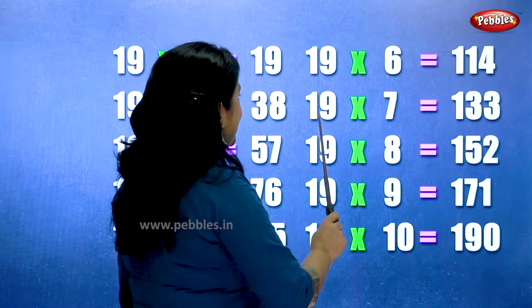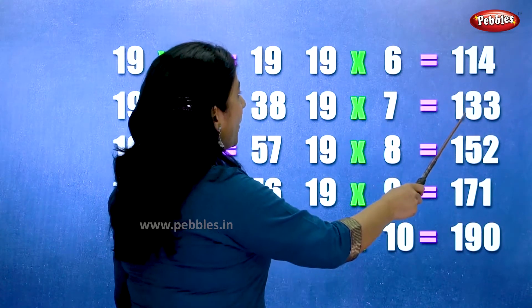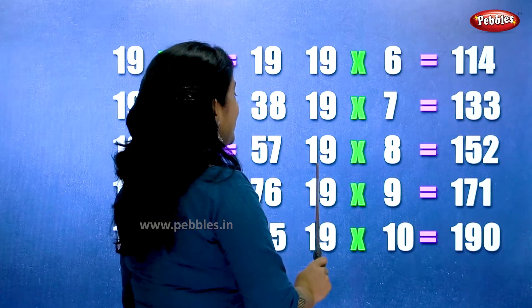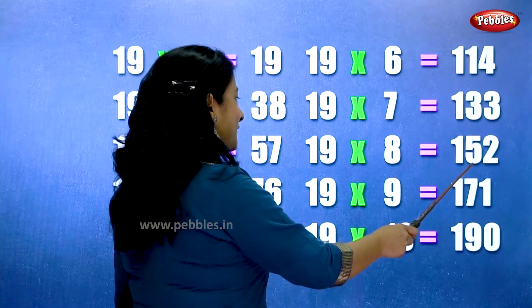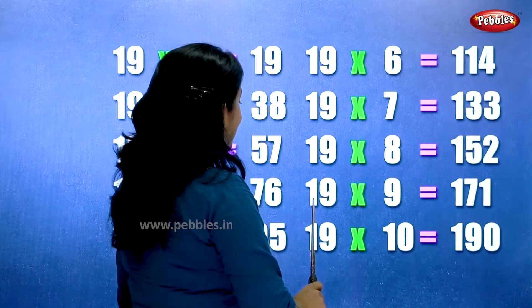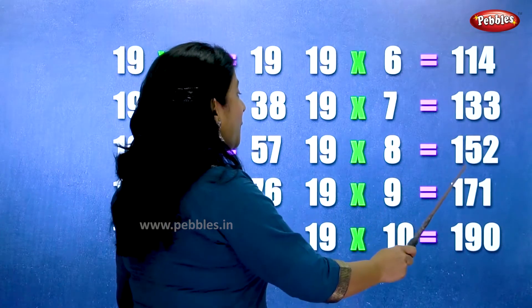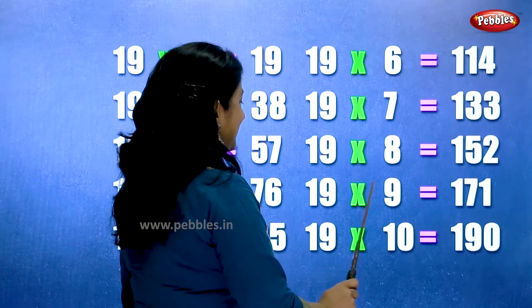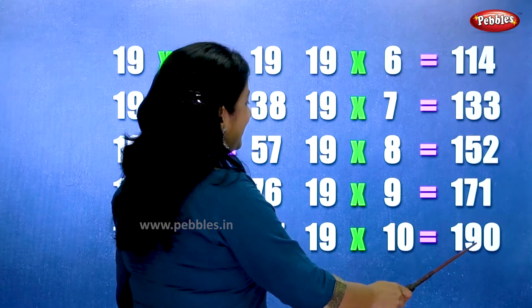19 sevens are 133. 19 eights are 152. 19 nines are 171. 19 tens are 190.